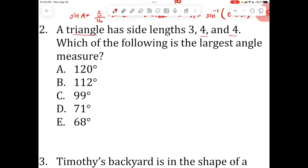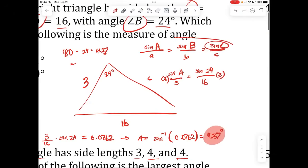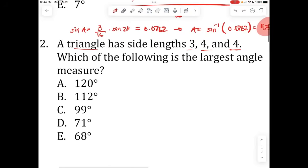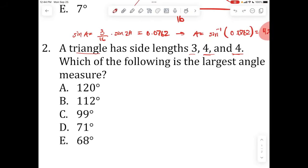This problem, a triangle has side lengths 3, 4, and 4, which of the following is the largest angle? So what we're going to do is, since you're not given any angle measures, this formula up here where you're dependent on angle measures is going to be useless. You need angle measures to use law of sines, but to use law of cosines, you don't.